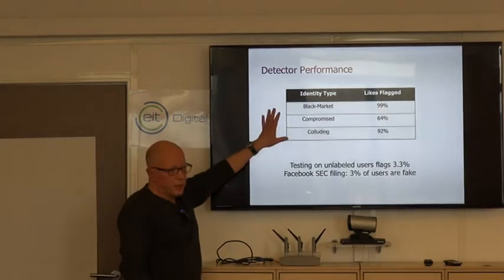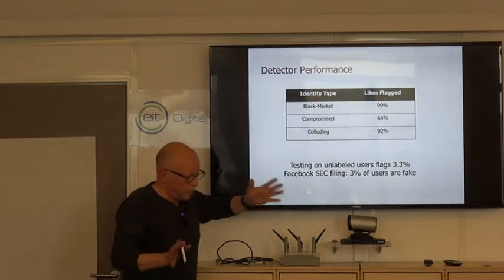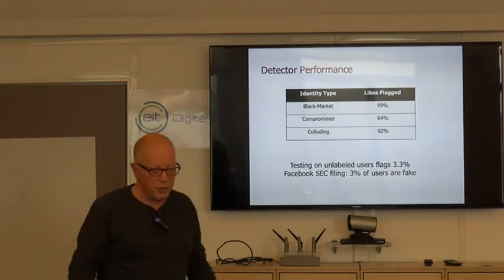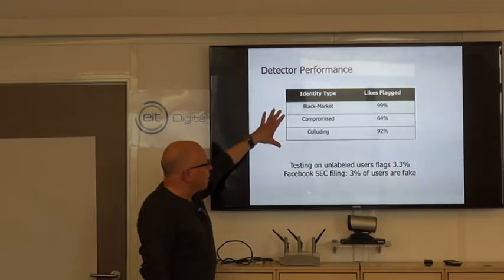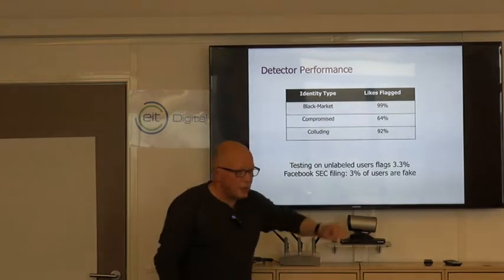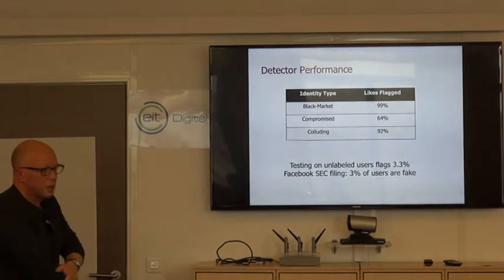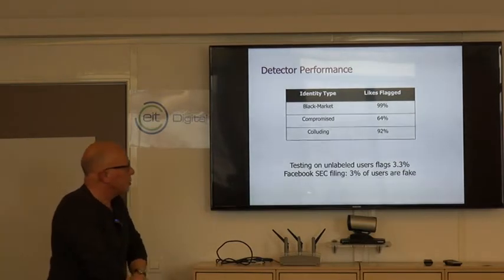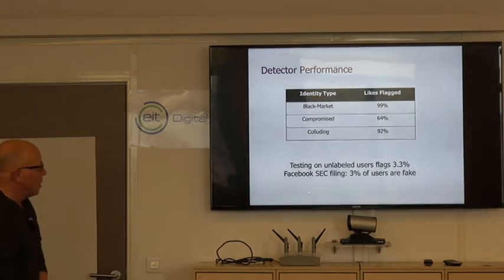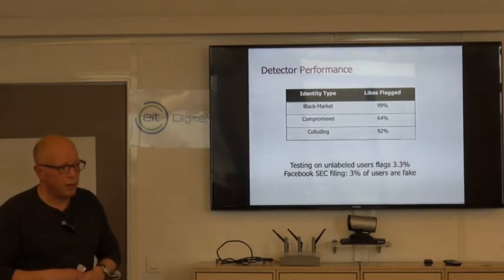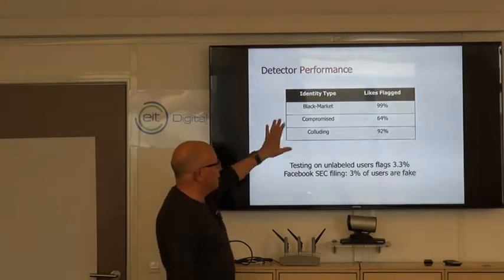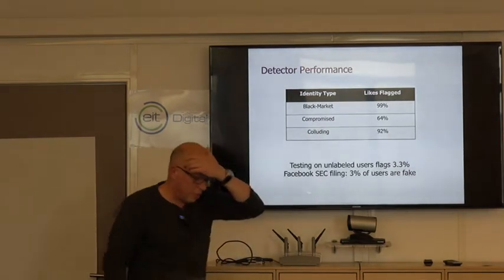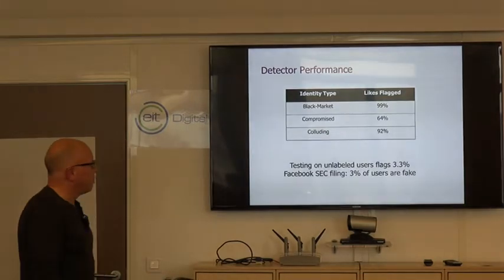This is just taking the collection of all measured data and putting it through the subspace detection method. What we find is that 99% of the black market users are flagged, 64% of the compromised users are flagged, 92% of the colluding users are flagged. So in terms of recall at least, we're doing great. This is very, we're able to, if someone is behaving fraudulently, it seems like this method is pretty good at detecting this.